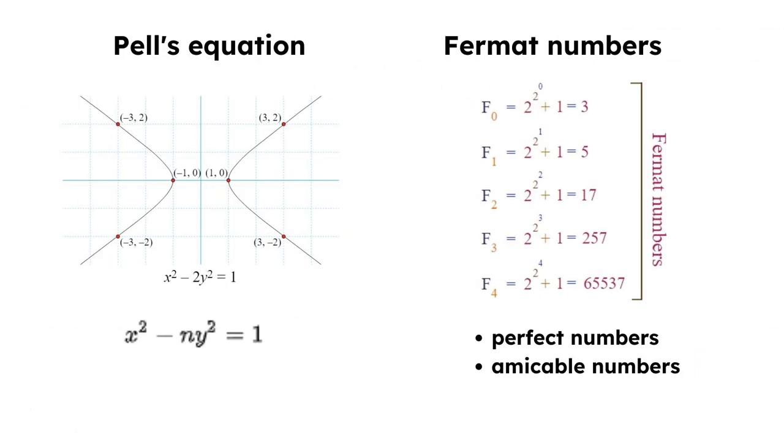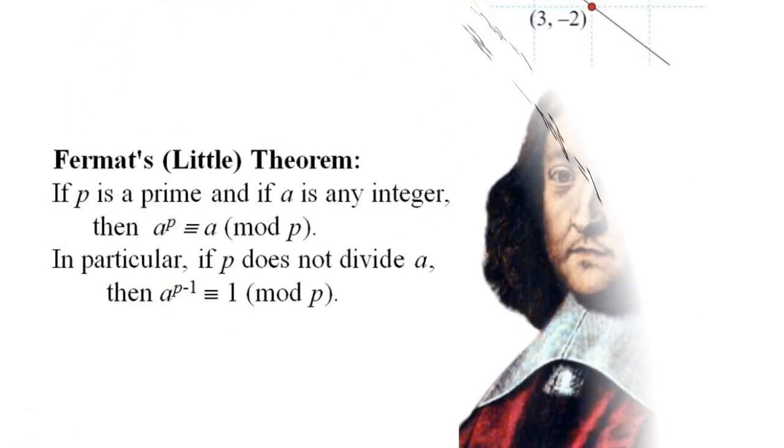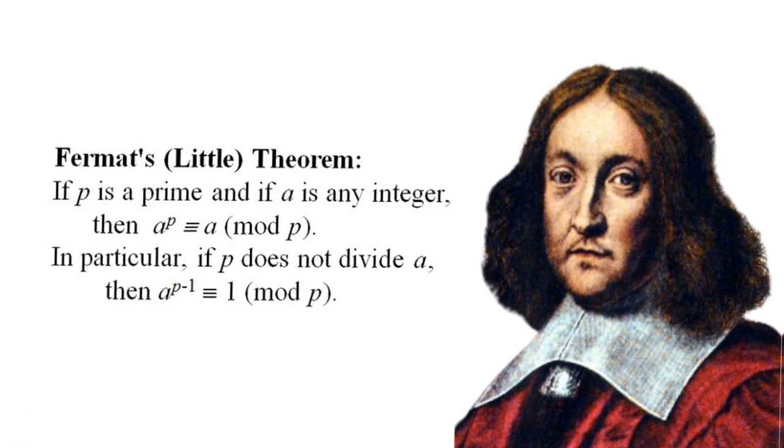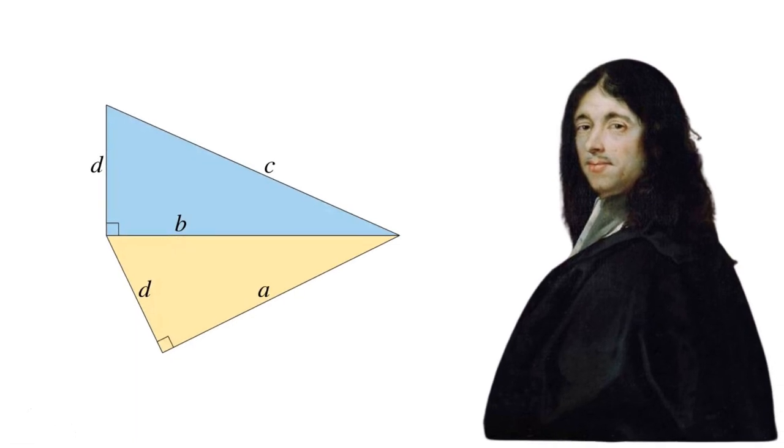In number theory, Fermat explored Pell's equation, perfect numbers, amicable numbers, and what we now call Fermat numbers. His investigations led to Fermat's little theorem and a factorization method. He's known for Fermat's right-triangle theorem and the two-square theorem.